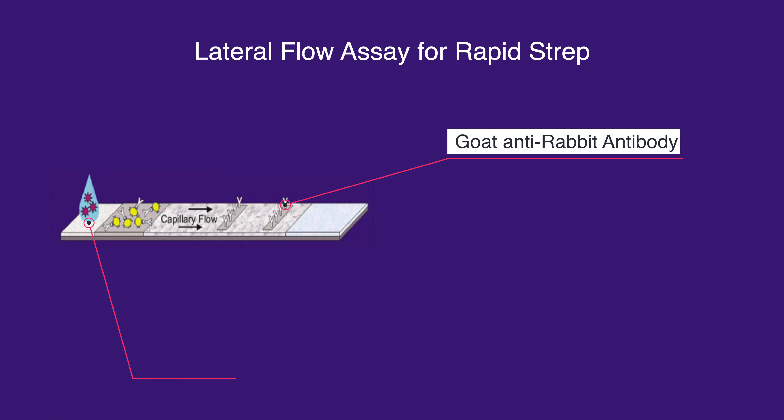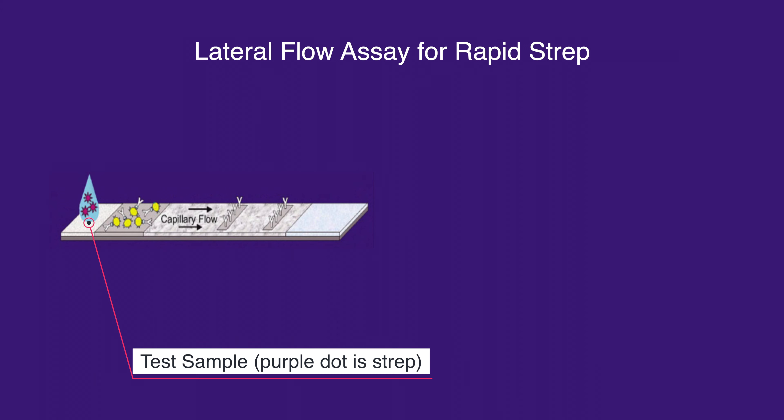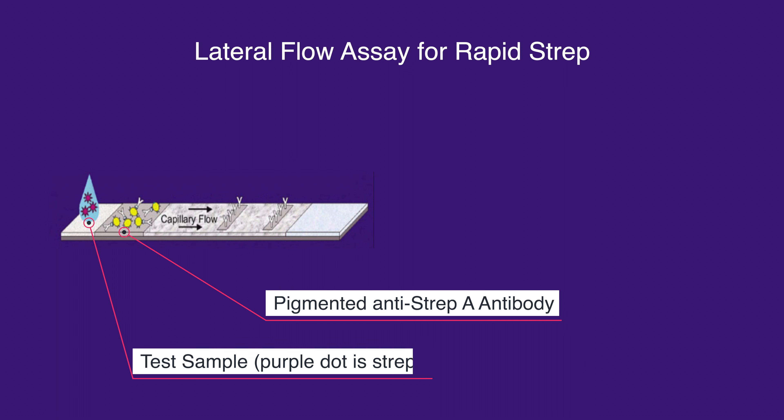When the test strip is immersed into the specimen solution, it gets absorbed into the test strip pad where it mixes with the anti-strep A antibody attached to a pigment shown here as a yellow circle.